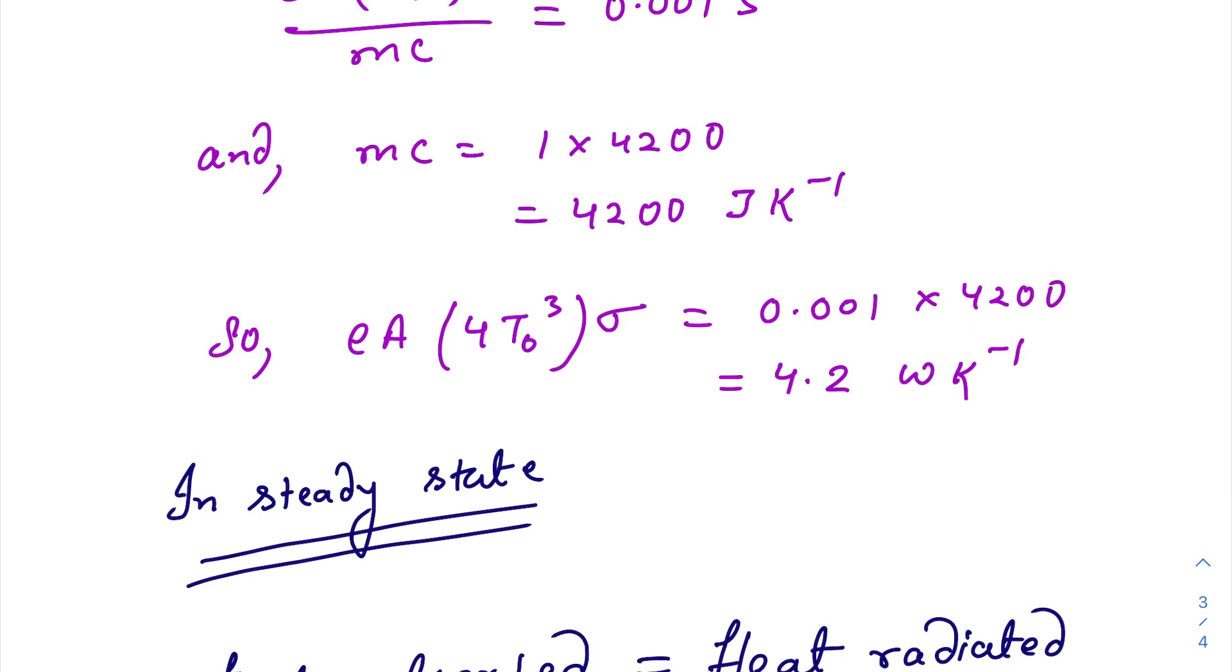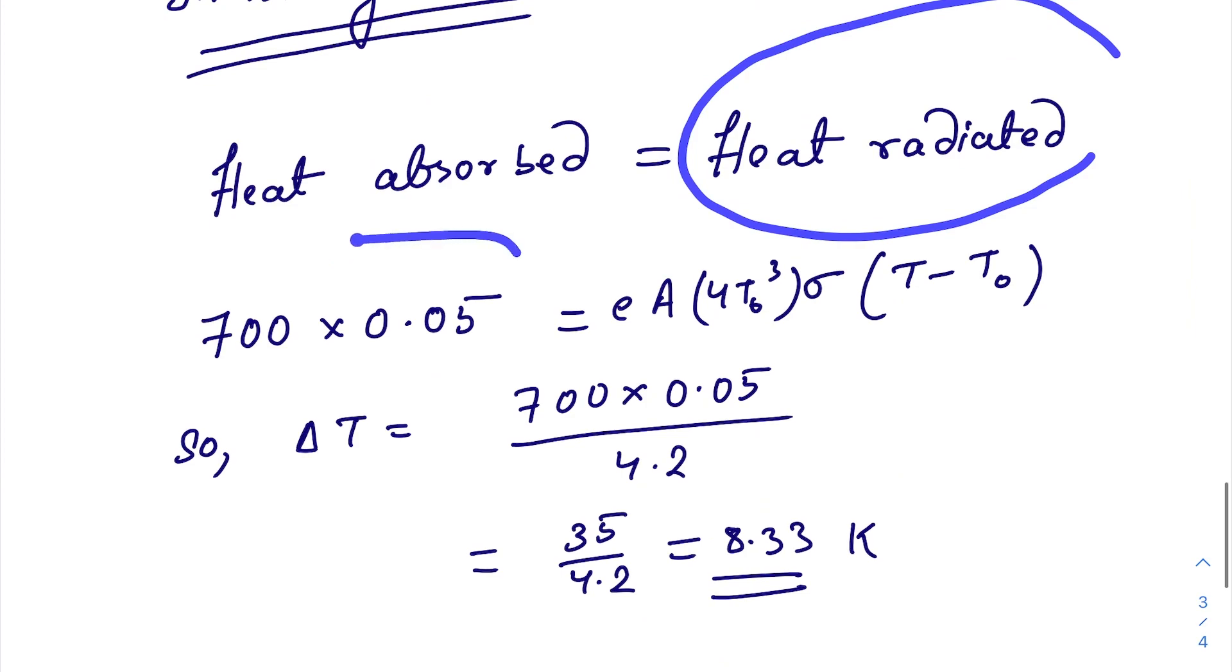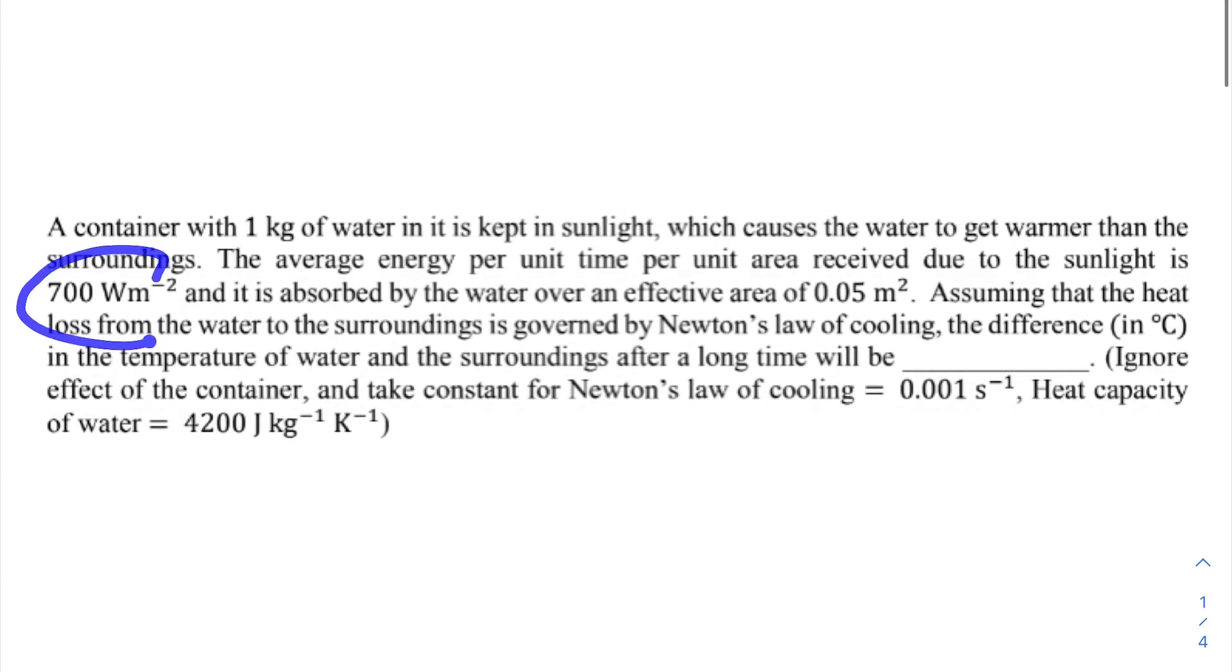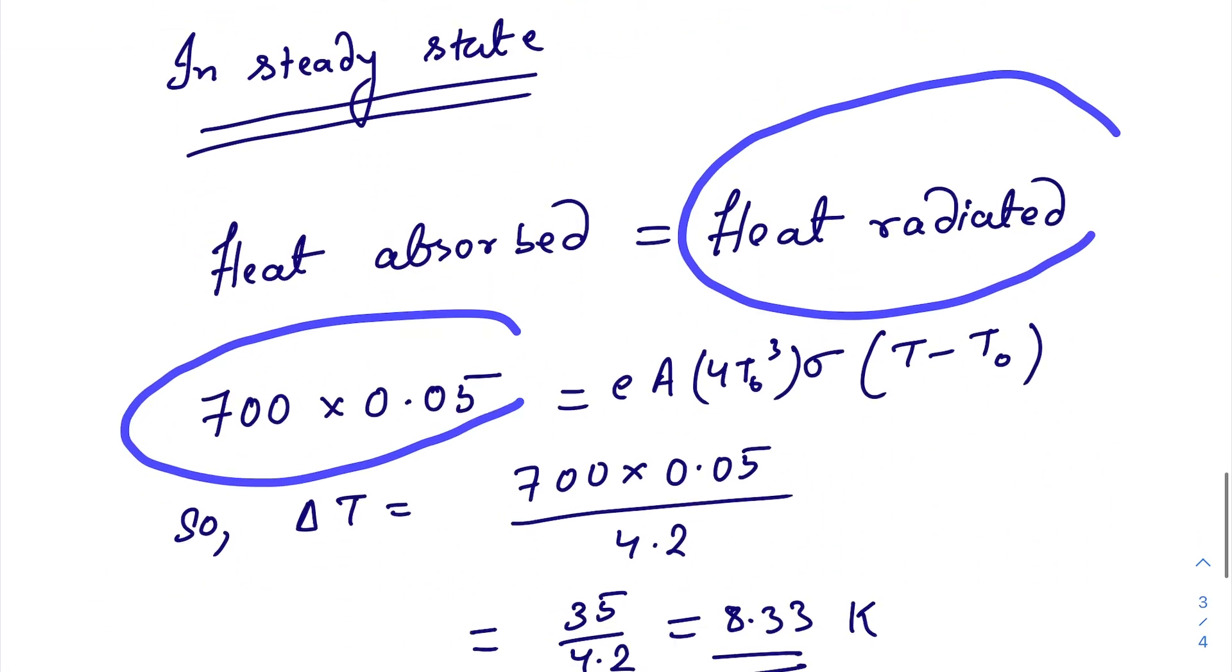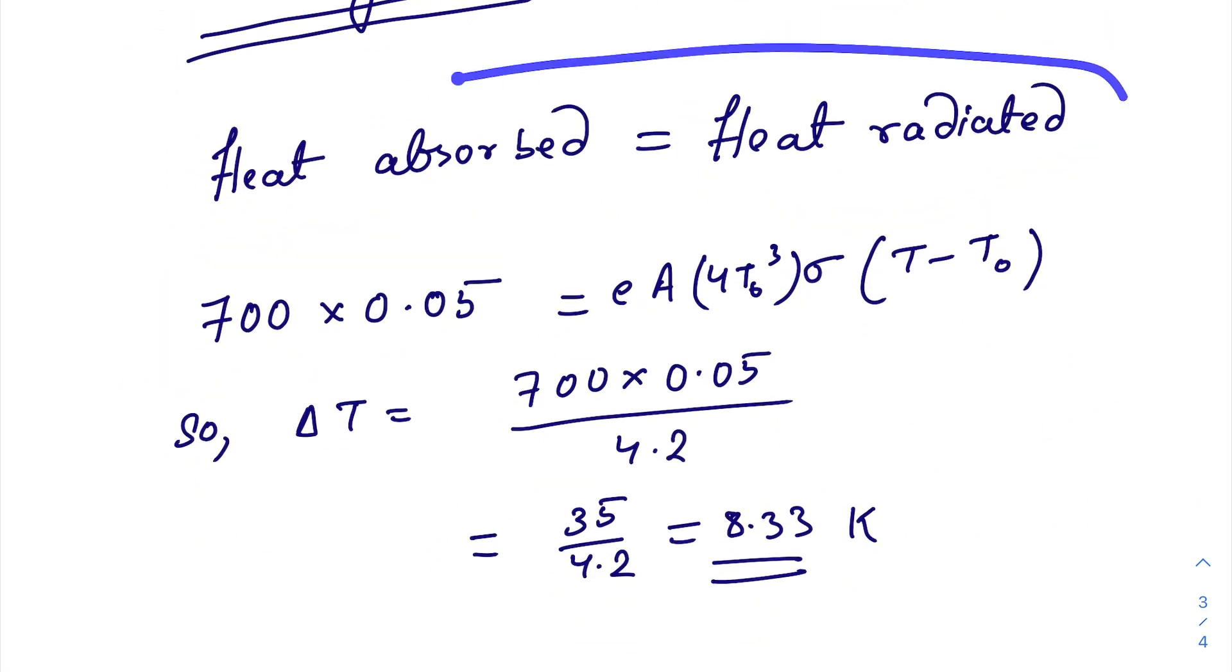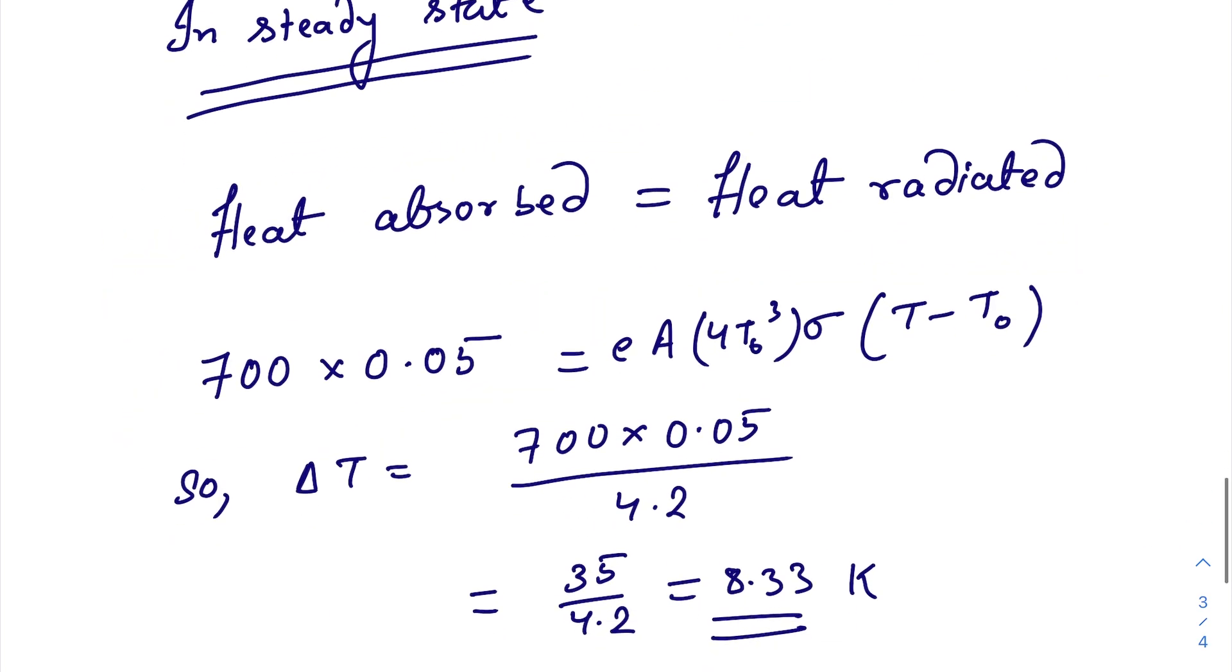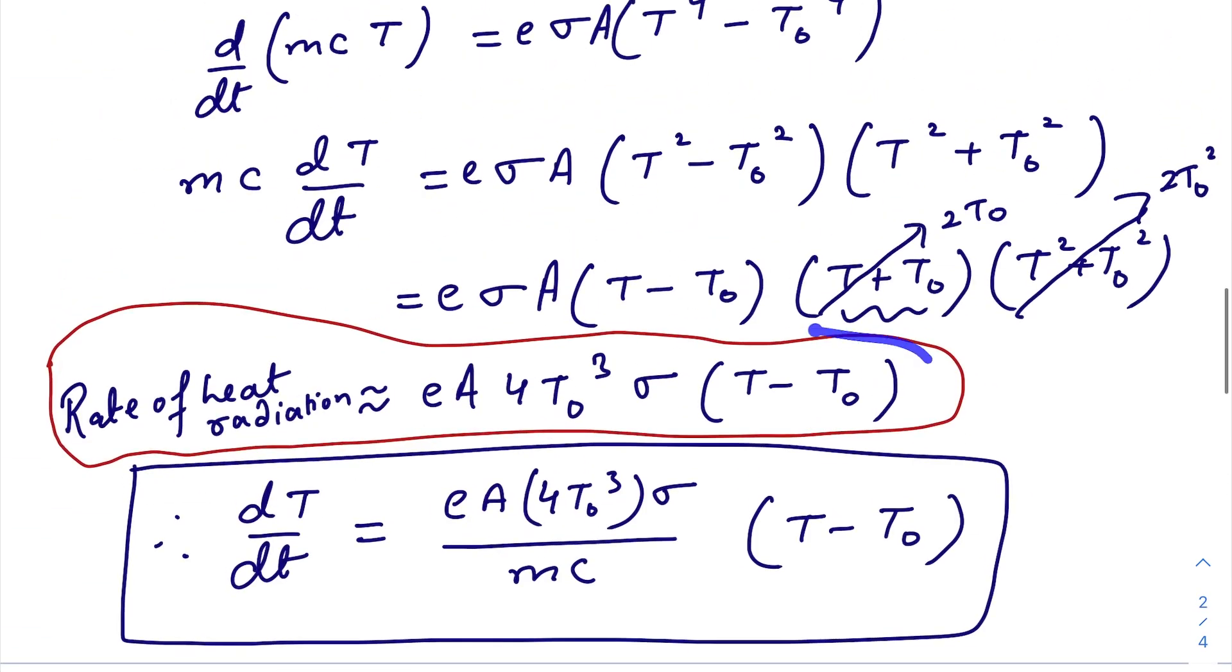Now, in steady state, the amount of heat absorbed by the water will be equal to the heat radiated. Heat absorbed is 700 times the effective area, per unit time. 700 times 0.05 equals 2. This is the heat radiation term. We will just use this one.